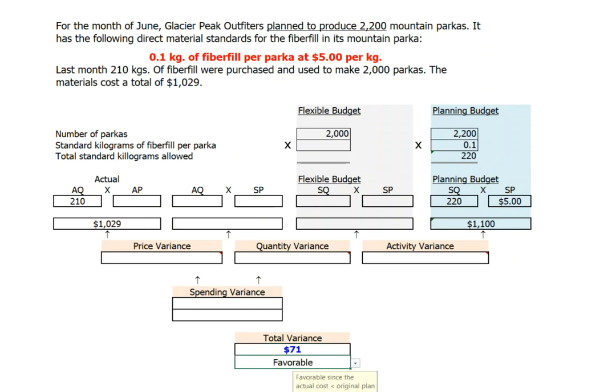The next step is to break this total variance down into three components: a price variance, a quantity variance, and an activity variance. If you recall, the first step is to complete our flexible budget.